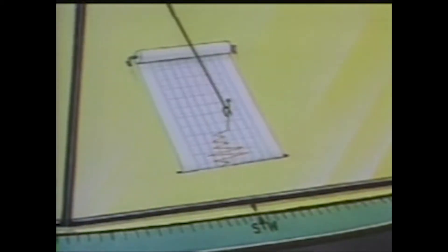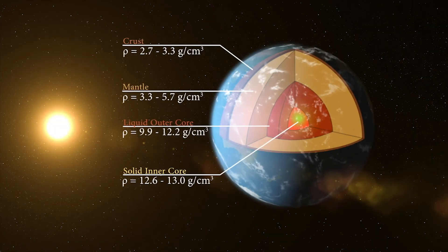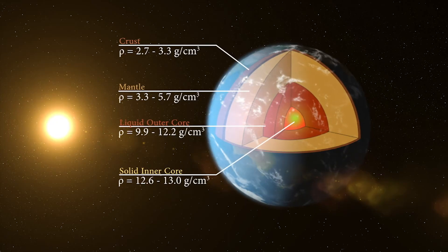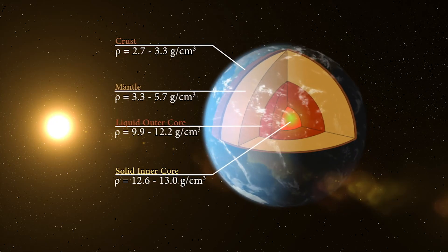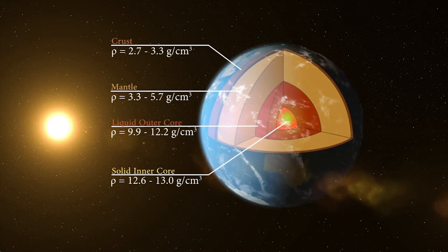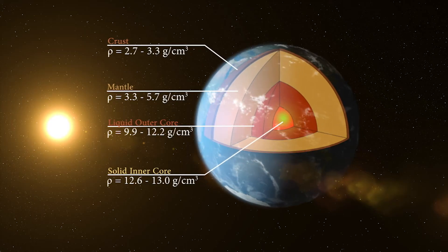This has been confirmed by seismology, measuring the vibrations from earthquakes and volcanic eruptions and the speed they travel through different regions of Earth's interior. Seismologists recognize four distinct regions in the interior of Earth with very different properties. Note that the density of the core rises to 13 grams per centimeter cubed.